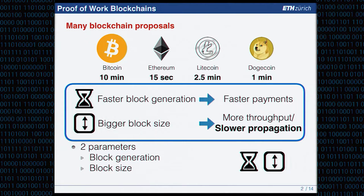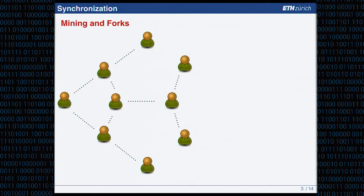However, the drawback is that we get slow propagation on the underlying peer-to-peer network. So why is propagation so important in open and decentralized blockchains? The synchronization among miners in the network is crucial. These nodes are connected through TCP/IP and these are miners solving the proof-of-work puzzles.